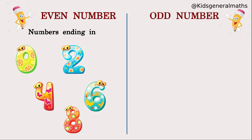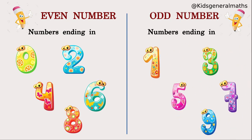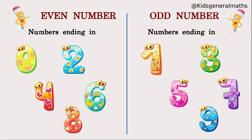Next we are going to see the odd numbers. Suppose a number ends with 1, 3, 5, 7, or 9, it will be called an odd number.